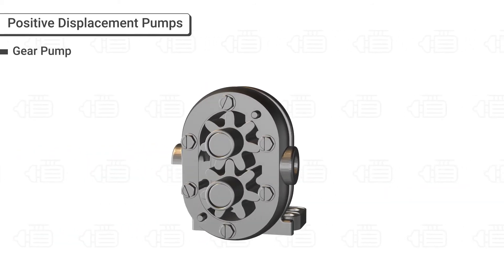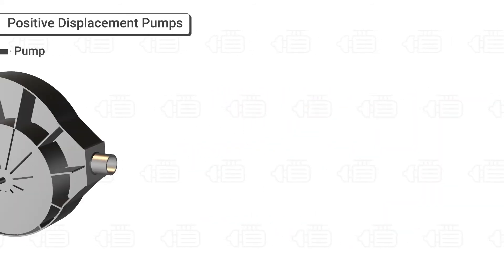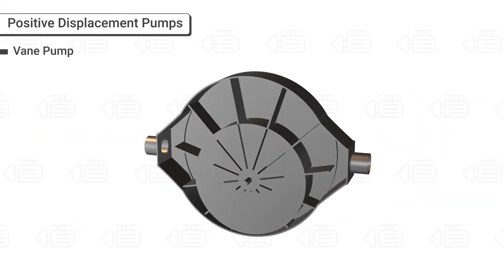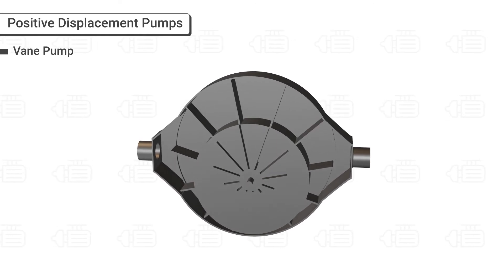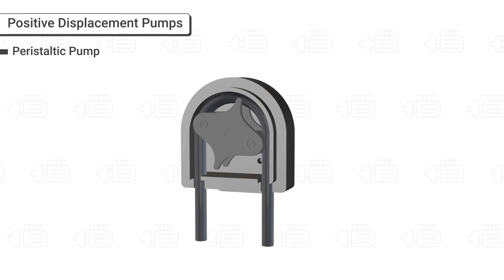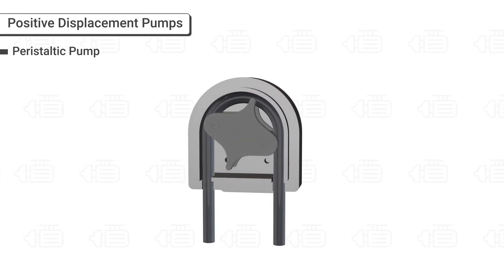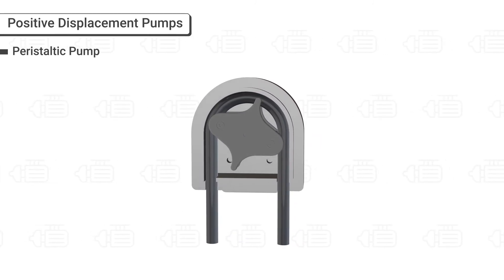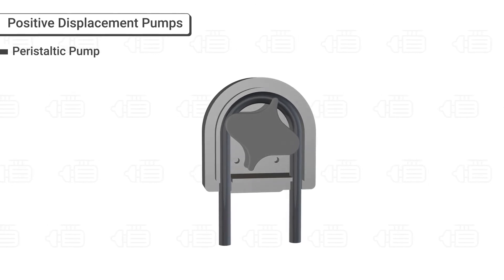The Gear Pump uses gears to pump fluid by displacement. The Vane Pump consists of vanes mounted to a rotor that rotates inside a cavity and moves the fluid. The Peristaltic Pump consists of a single piece of hose which is compressed via rollers or shoes, moving fluid from the inlet to the outlet of the pump.